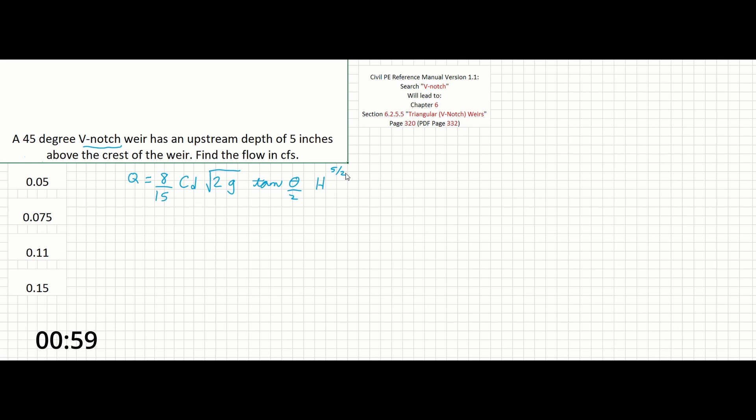So in this case we've got theta as the V-notch angle in degrees, h is the head or depth of discharge over the weir, Cd is your coefficient of discharge. So let's start filling in some of these terms just to simplify the equation.